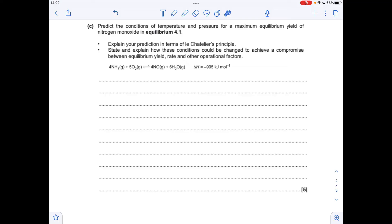Moving on to part C, we've got to predict the conditions of temperature and pressure for a maximum equilibrium yield of nitrogen monoxide. In other words, we want the equilibrium to go over to the right-hand side. We'll start with temperature. You can see it's an exothermic forward reaction, so a low temperature will favour the forward reaction.